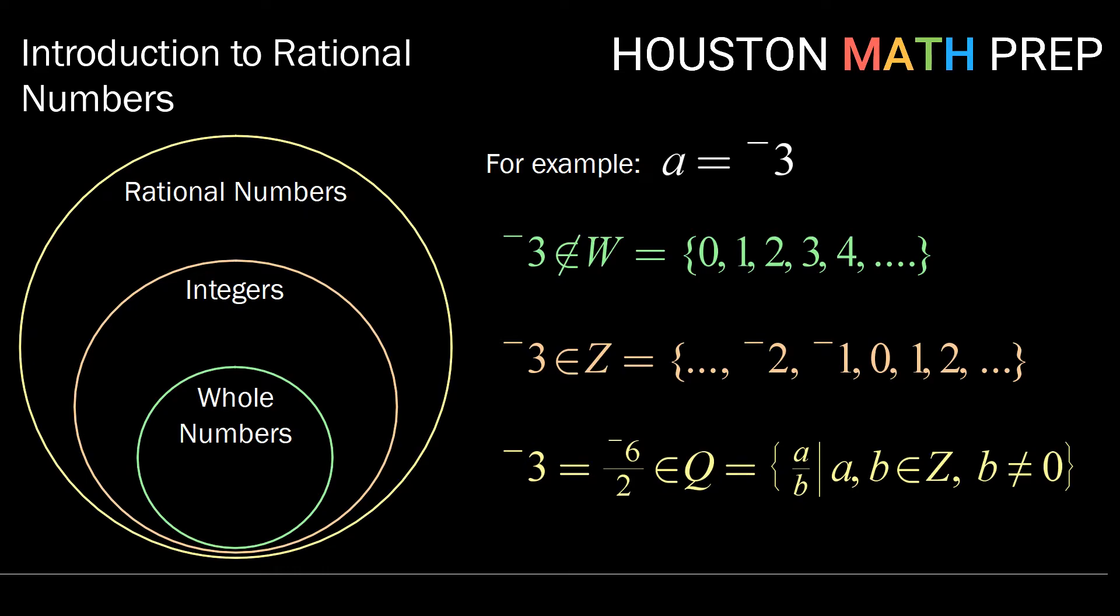Negative three is also a rational number. We should note here that every number that is an integer is also a rational number, because we can see from our diagram that the integers are contained within the rational numbers. So one way we could write negative three as a quotient of two other integers would be negative six over two. So if we were to place negative three in our diagram, we would place that inside the integer circle, but outside the whole number.